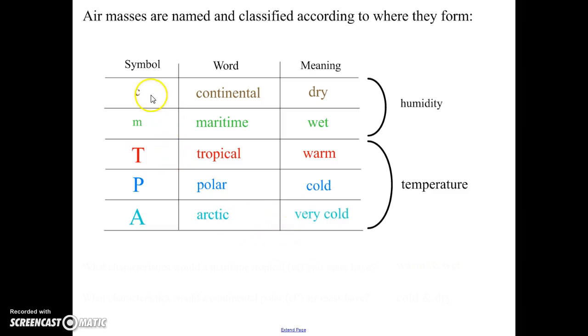So what we do is we use these five symbols, these five words, and we can combine them in different ways to name air masses.